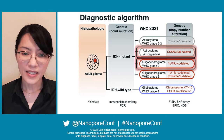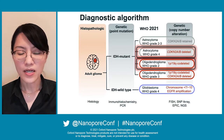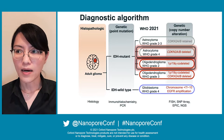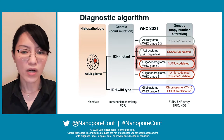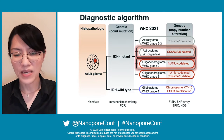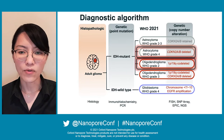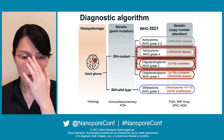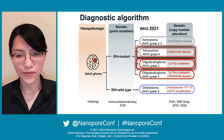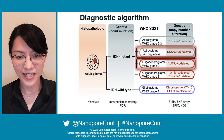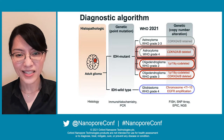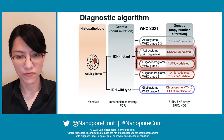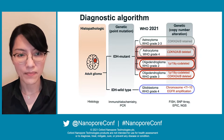Another example: if we find retained or no loss of 1p19q, but we find the CDKN2AB deletion, we can classify this sample as astrocytoma WHO grade 4.